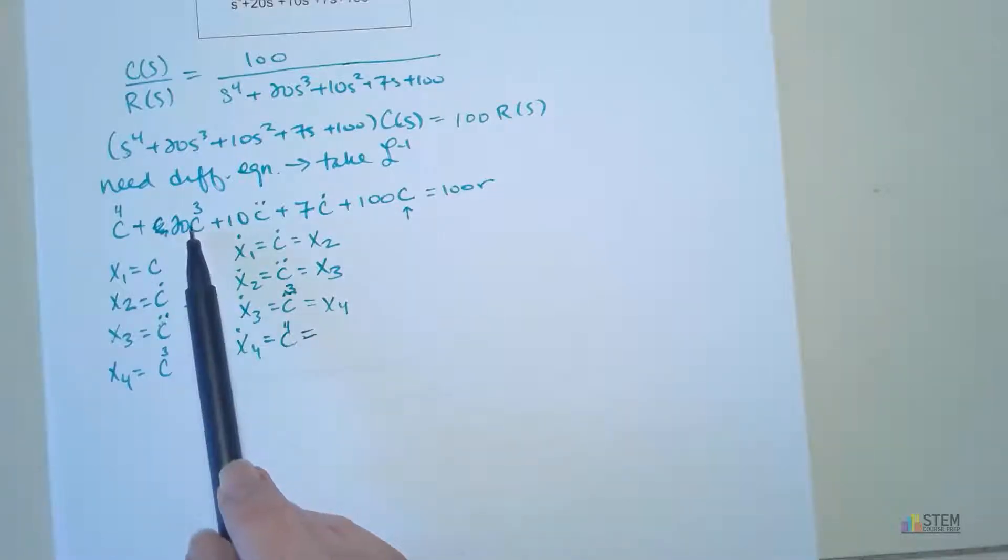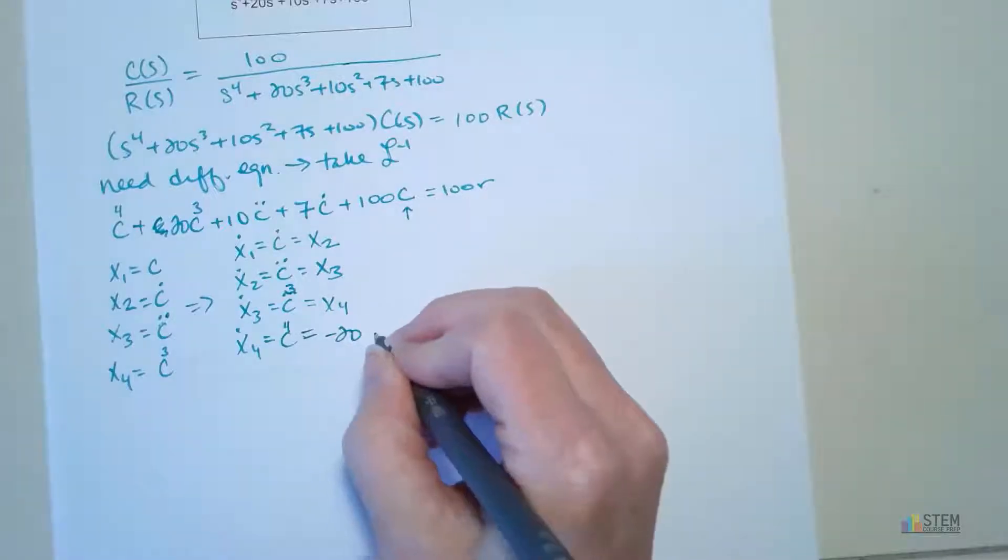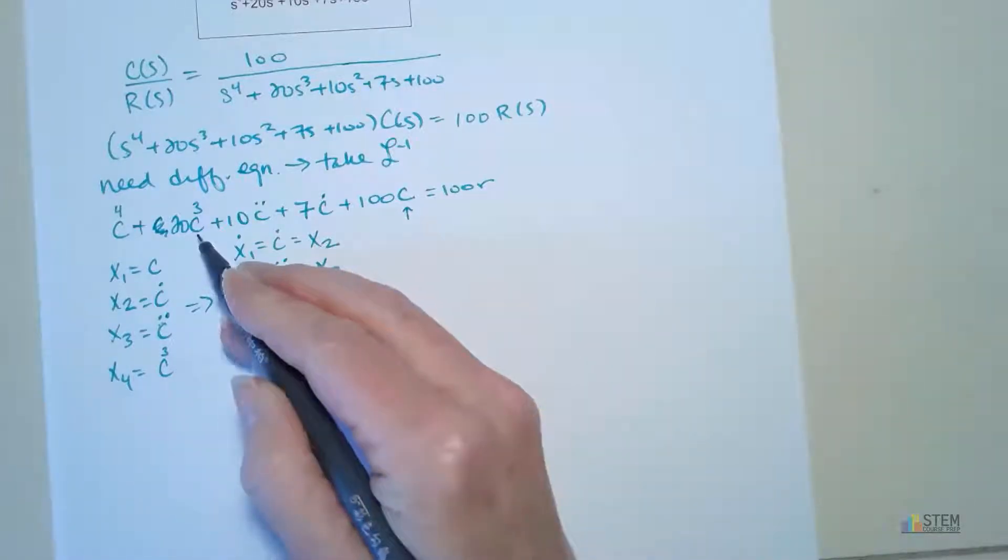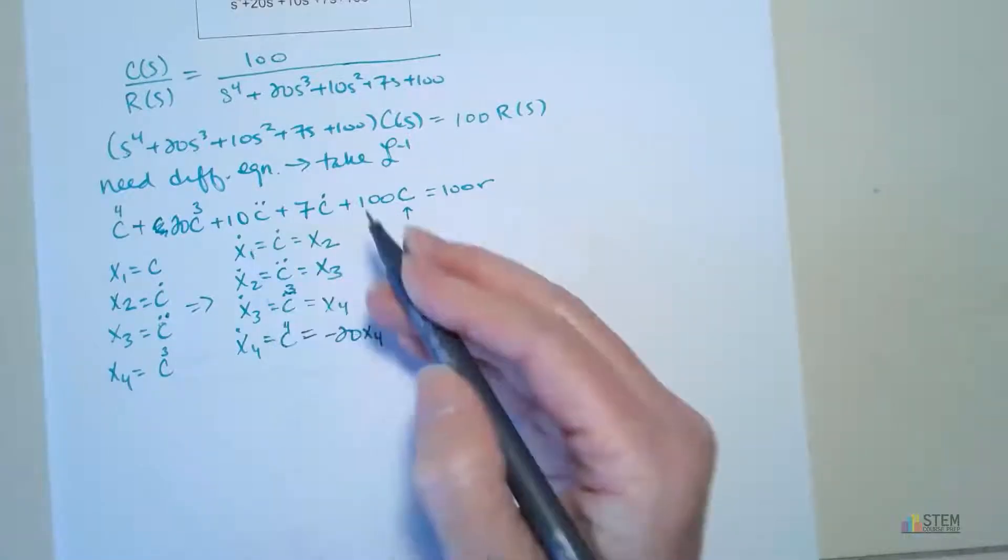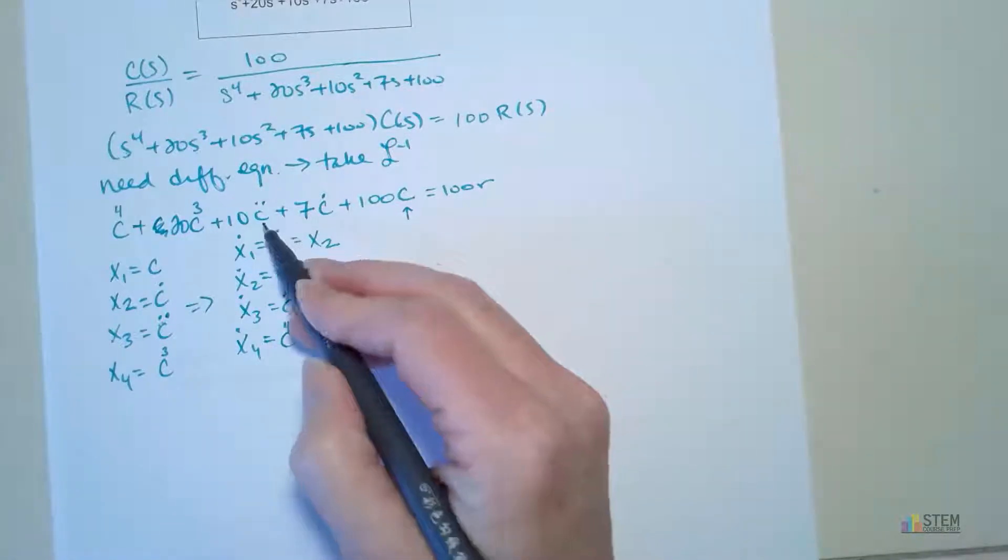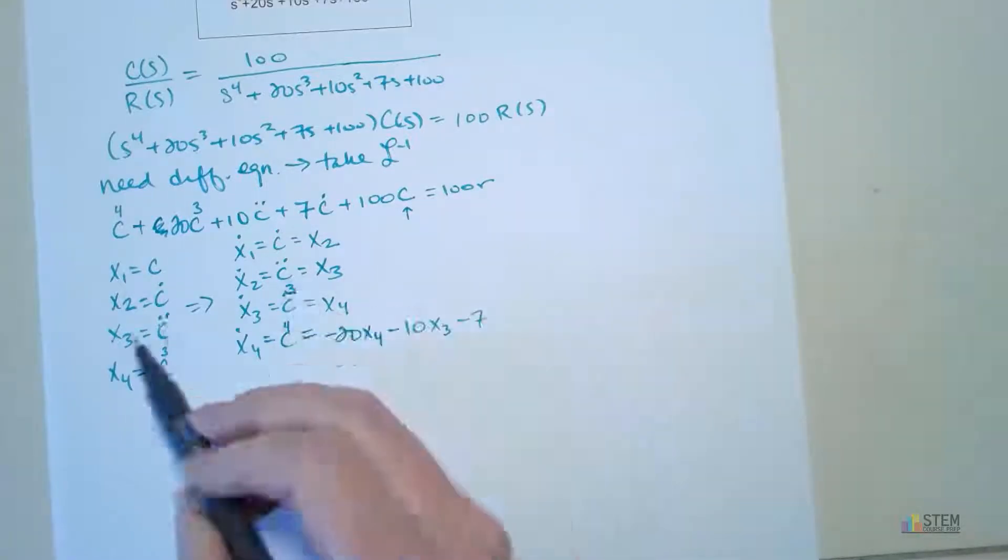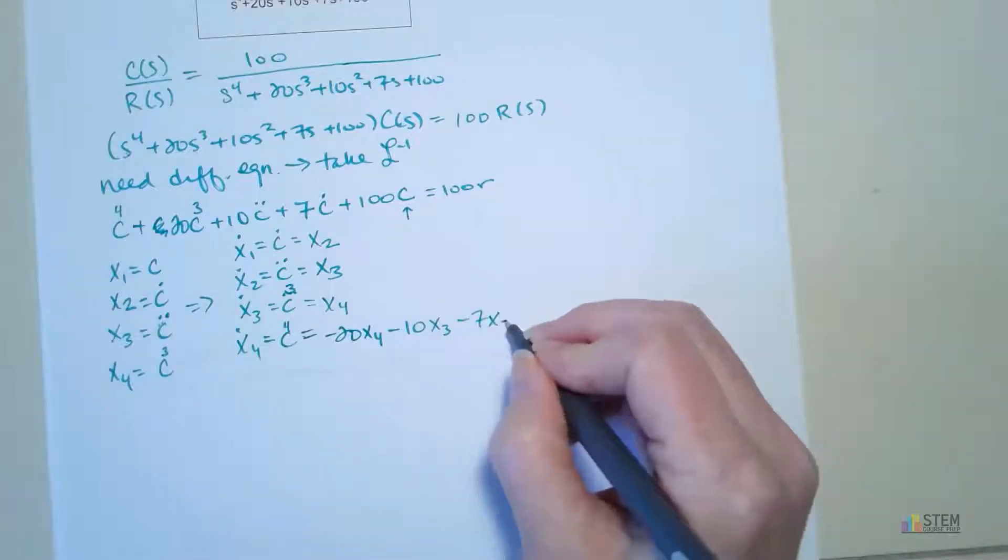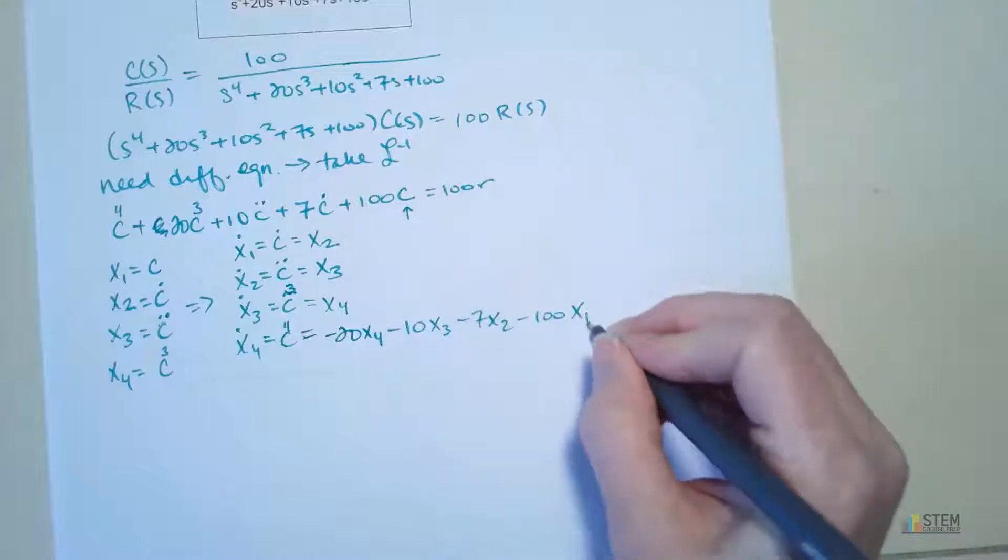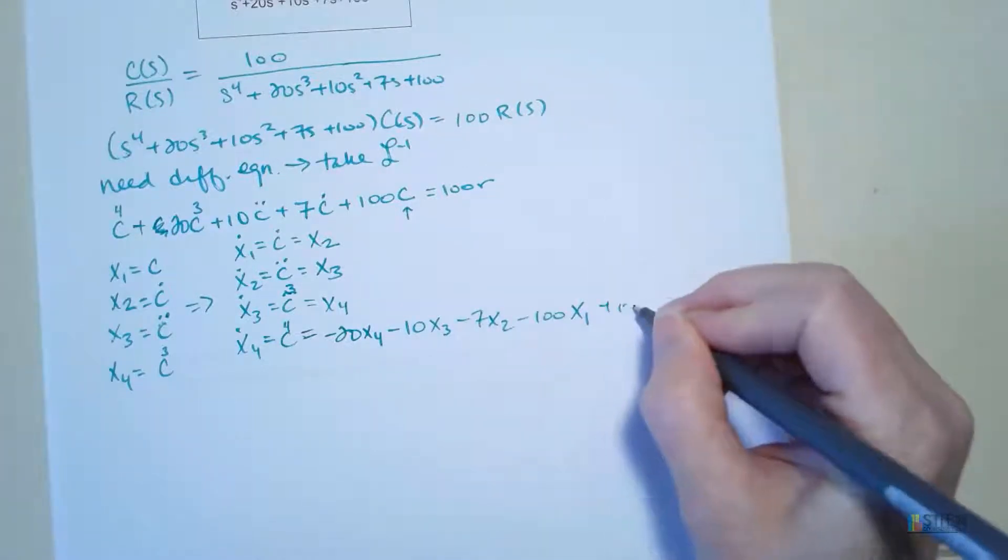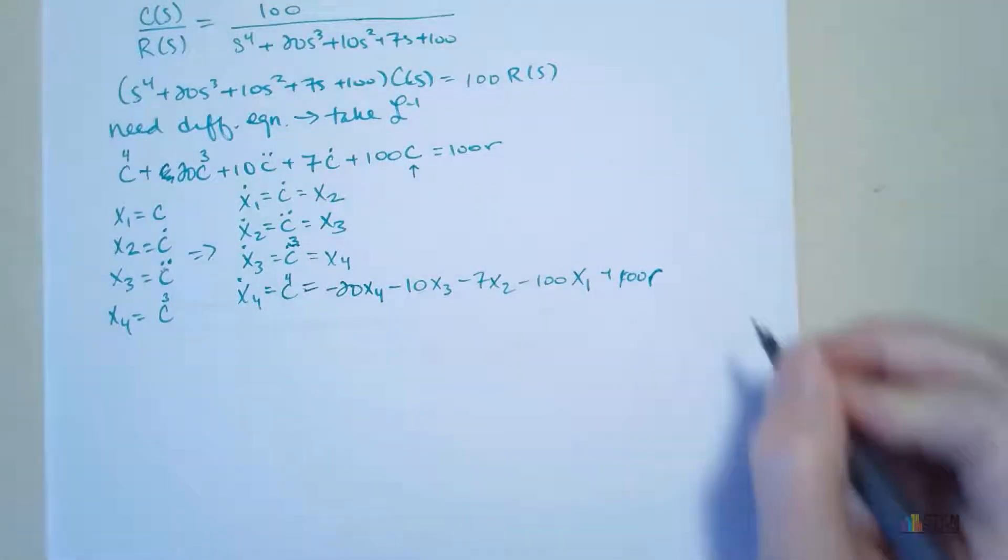We've got to solve for this. So let's move all this over. And that's going to give us negative 20. We have the 3rd derivative of c. That's represented by x4. Then we're going to have negative 10. We got c double dot. That's x3. We got minus 7 c dot, but c dot is x2. We got minus 100. We got c, but that's x1. And then plus 100 r. So now we have that. We're ready to do the matrix form.